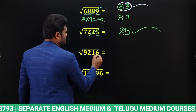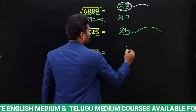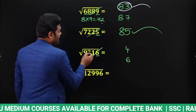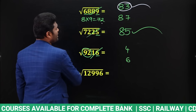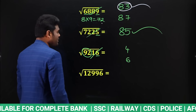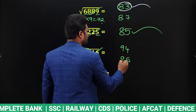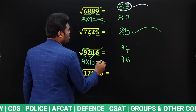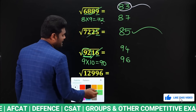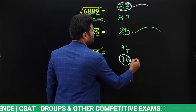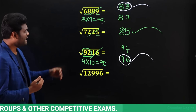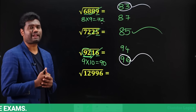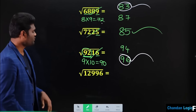For √9216: last digit is 6, possibilities are 4 or 6. Strike off last two digits — remaining is 92. Perfect square close to 92 and less than 92 is 9² = 81, giving 94 or 96. Multiply 9×10 = 90. Compare: 92 is greater than 90, so answer is the bigger value — 96. So √9216 = 96. Very simple — fraction of seconds.